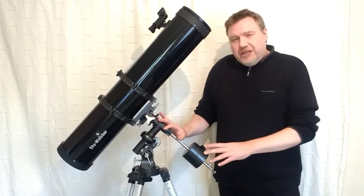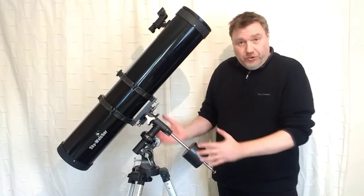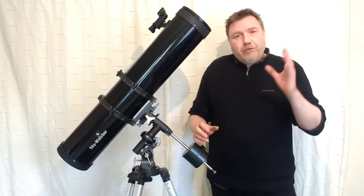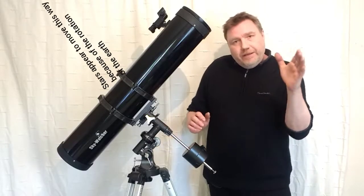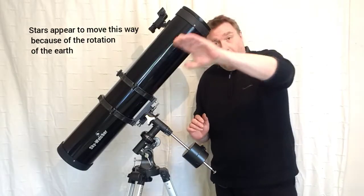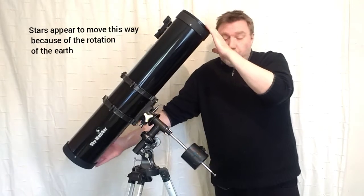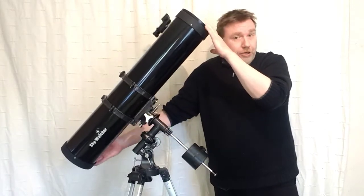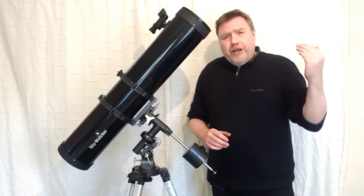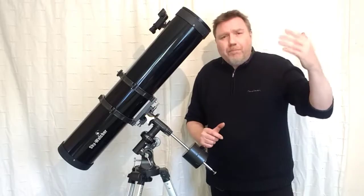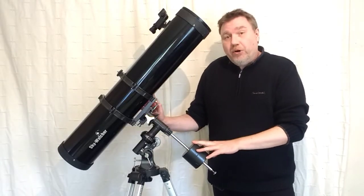So first of all, let me just explain the reason why a telescope is mounted on a mount such as this, and it's just purely how the stars appear to move across the sky. They appear to move in an arc shape like that.